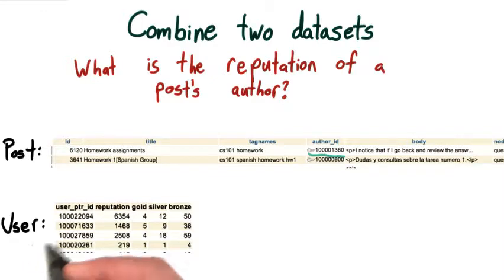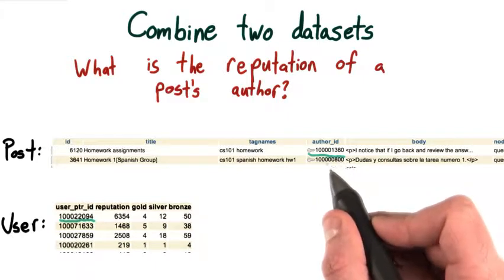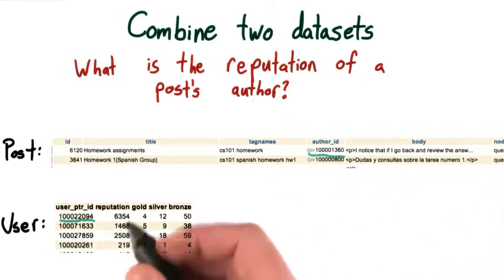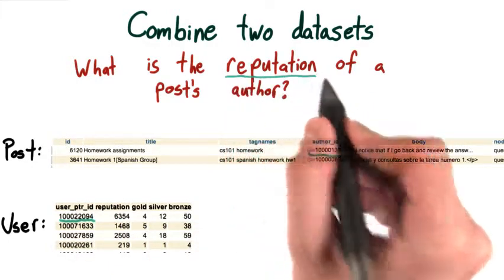The user table is this user pointer ID, and that is the common key we're going to use to combine these two data sets. It also has some other information like reputation, which is going to help us answer this question.